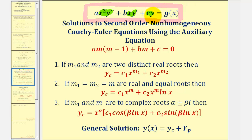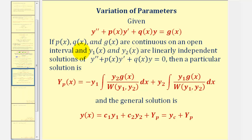So once we know our differential equation fits this form, to find the general solution, there will be two major steps. The first step will be to find the complementary function, which we can do by finding the solutions to this auxiliary equation, where the values of a, b, and c come from the differential equation. Based upon the types of solutions to this quadratic, it will affect the form of the complementary function. We'll then find a particular solution, big y sub p, using the variation of parameters method. One of the most important things to remember is that before applying it, the coefficient of y double prime must be one.